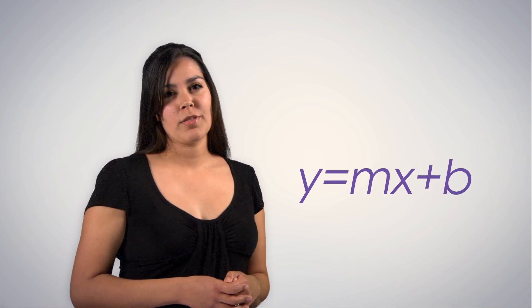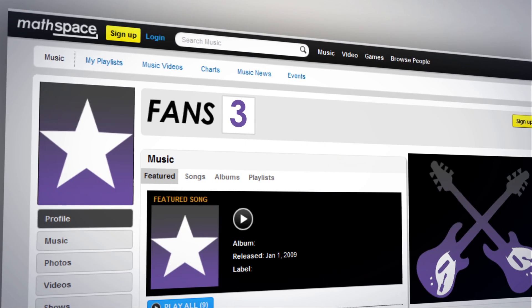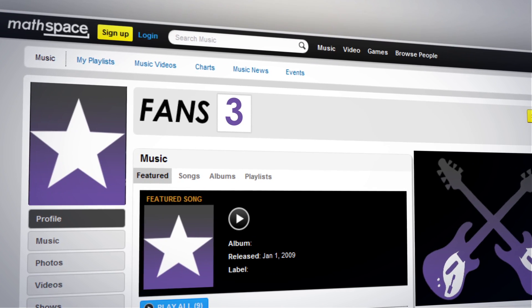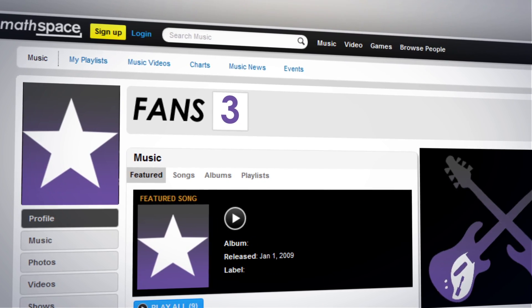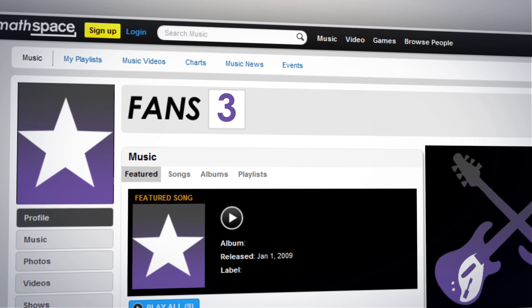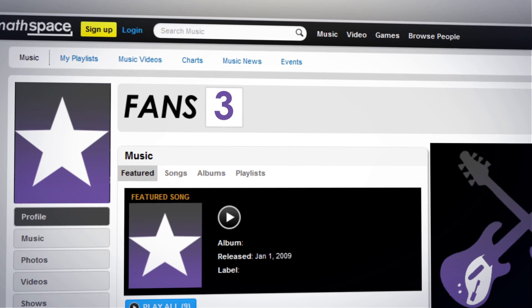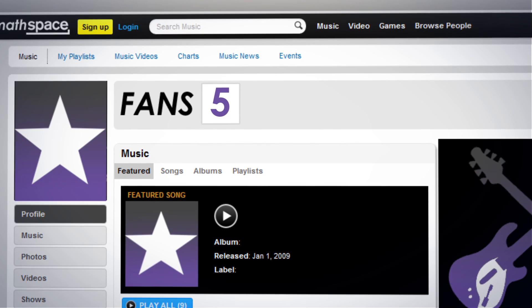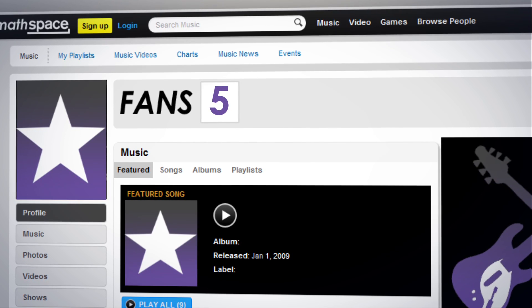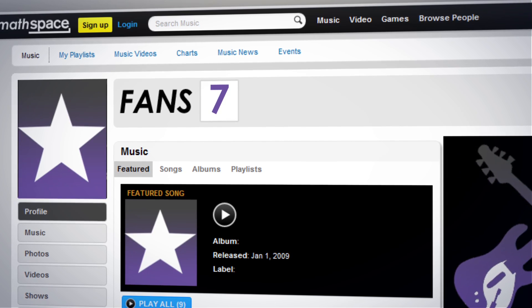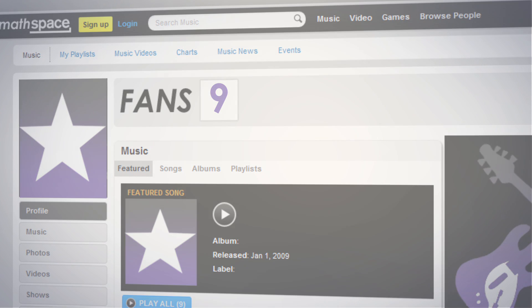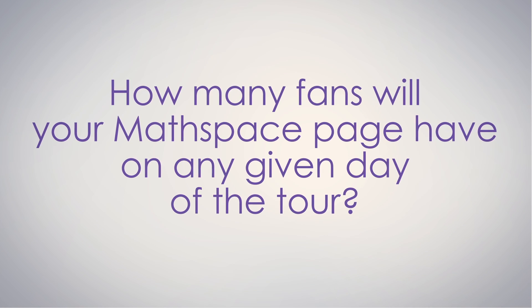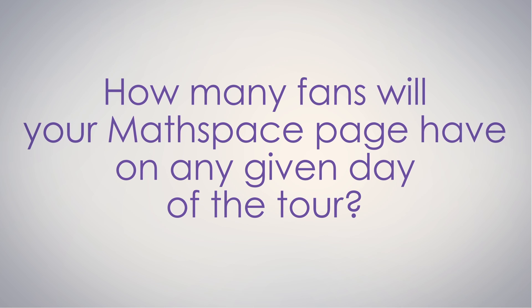As you know, you can't be famous without adoring fans, so imagine that your band has set up a MathSpace fan page to keep track of how your fan club grows while you're on tour. Let's say that at the beginning of the tour, you only had three fans on your MathSpace page, but while on tour, you notice that you're adding fans at a constant rate of two fans per day. The question is, how many fans will your MathSpace page have on any given day of the tour?